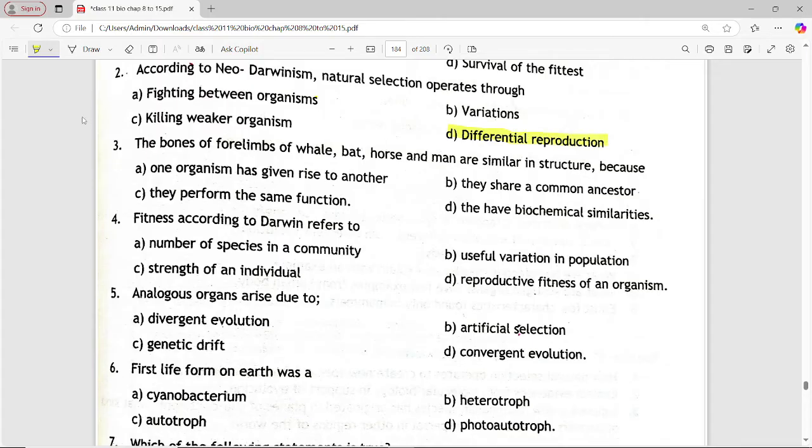Next MCQ is, the bones of four limbs of whale, bat, horse and man are similar in structure because. Options are, one organism has given rise to another, they share a common ancestor, they perform the same function, they have biochemical similarities. Answer is option B, they share a common ancestor.